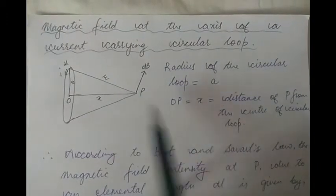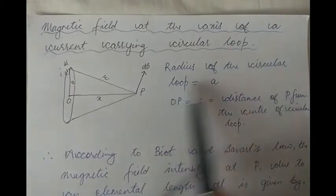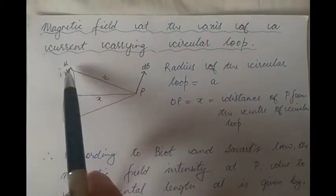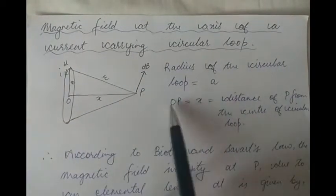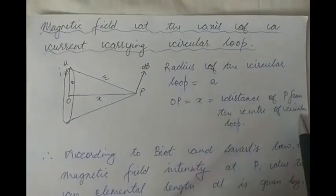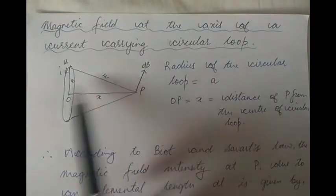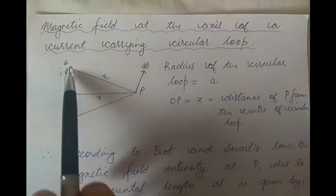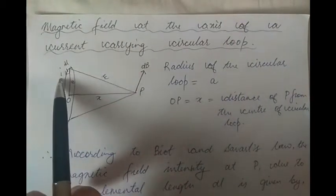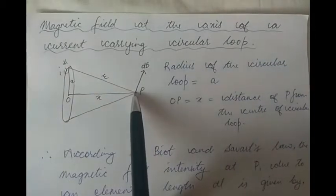OP happens to be the axis and we want to find the magnetic field intensity at point P. The radius of the circular loop is A, and OP is this distance X — the distance of point P from the center of the circular loop. We consider a small elemental length DL, and due to current I flowing through DL, we can calculate the magnetic field intensity at point P.